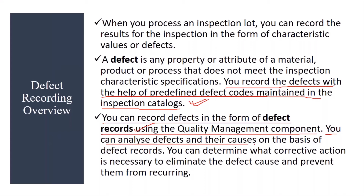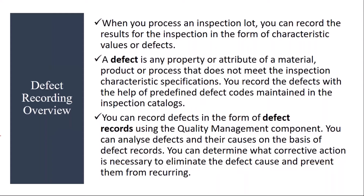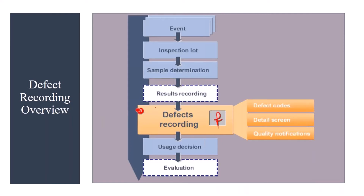You can analyze defects and their causes on the basis of defect records. Once you have defect recording, you have the option of analyzing these defects and their causes — why that defect happened. You can also determine what corrective action is necessary to eliminate the defect cause and prevent them from recurring. So you also have the option of preventive and corrective action based on this defect recording. After results recording, if there is any failure, you record those things using the defect recording function.